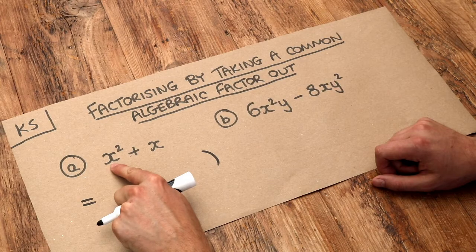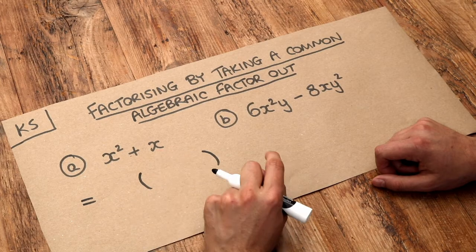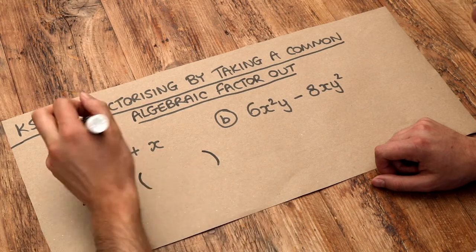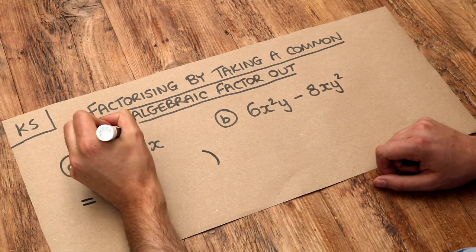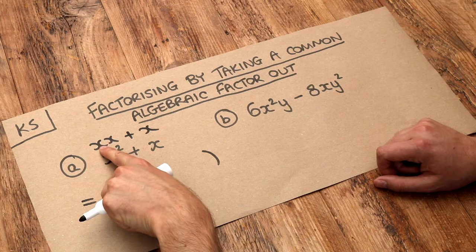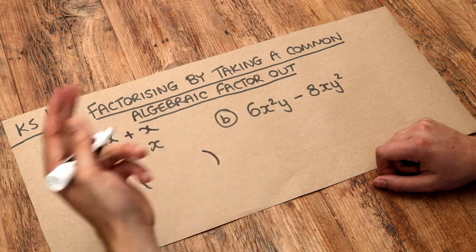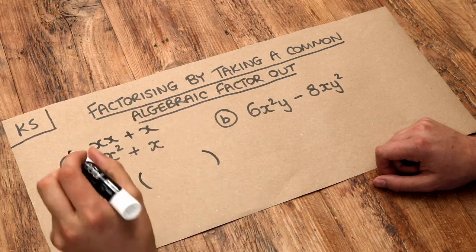So what's common to x² and x? Now if you were to think of x² as x times x, because x times x is x², then what's common to the x times x and the x? Well they have an x in common don't they?